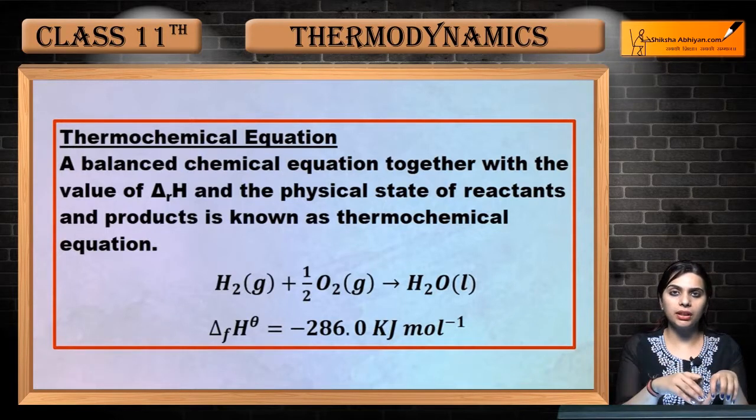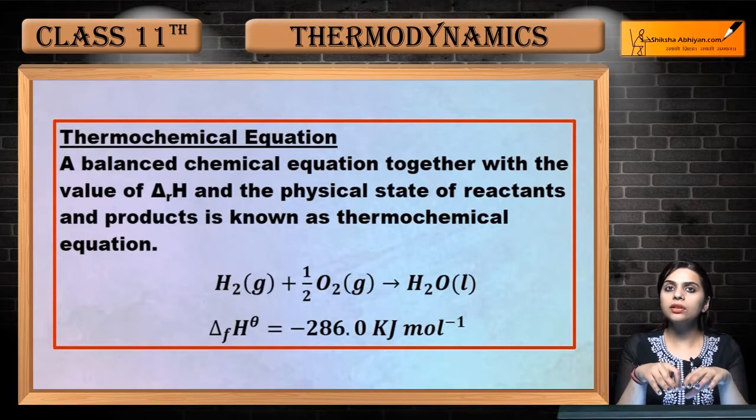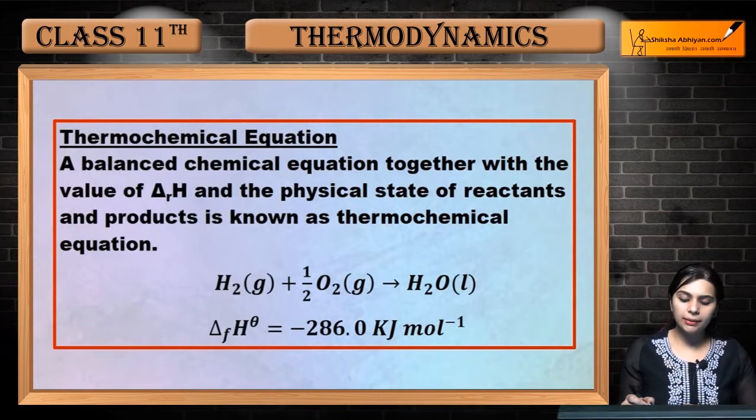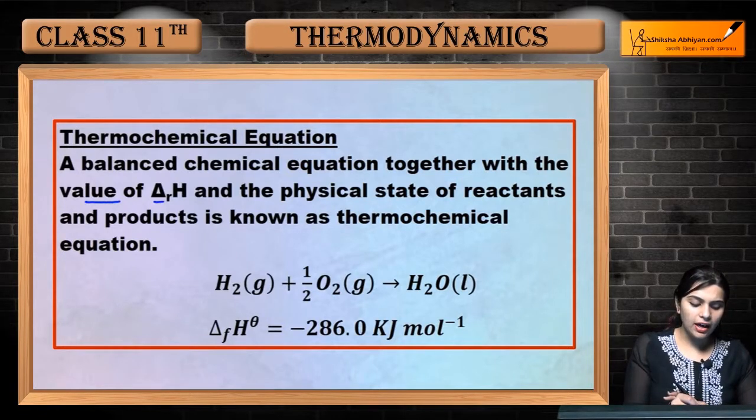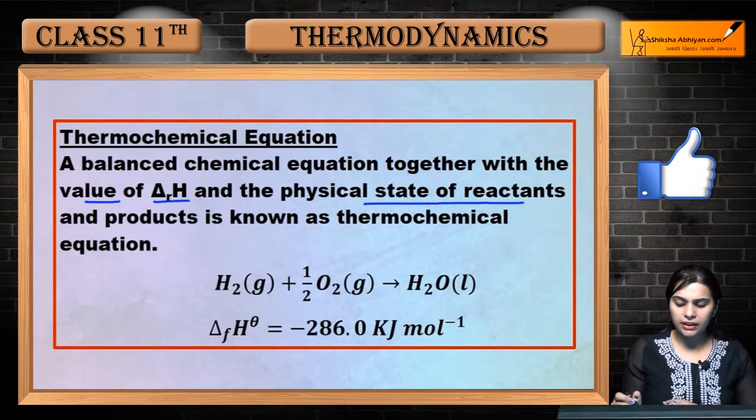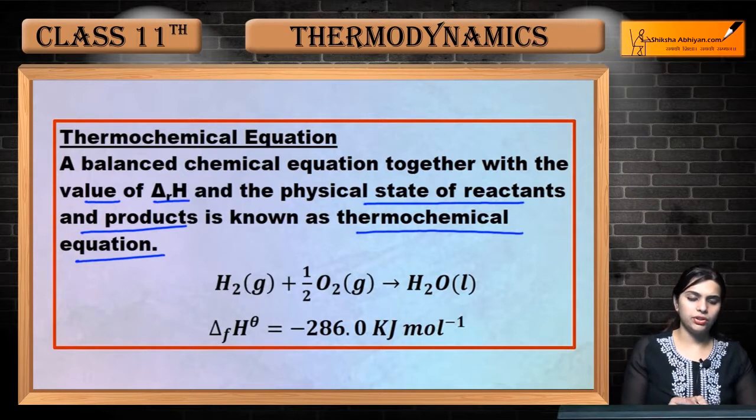Now, what is the method of writing it? When you write an equation with enthalpy, it's called a thermochemical equation. A balanced chemical equation together with the value of ΔrH and the physical state of reactants and products is known as a thermochemical equation.